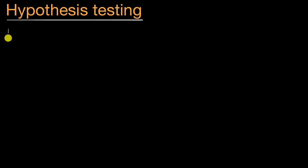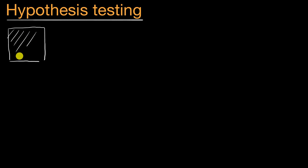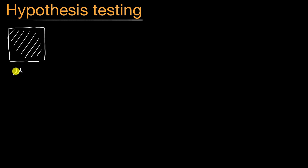Let's say, hypothetically, you run a website that has the mission of giving everyone on the planet a free education, and you want to think about how you might change the amount of time people spend on the site. Ideally, you want to increase that time, so there's more learning on the planet. Currently, the website has a white background, and the mean amount of time people spend on that white background is 20 minutes.